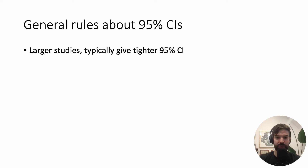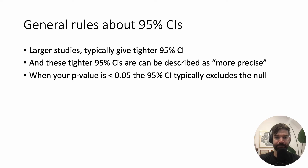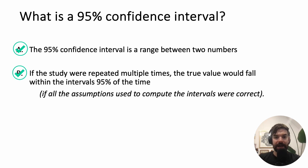Some general rules about 95% confidence intervals: larger studies will typically give a tighter interval — if you measure 1,000 giraffes you'd have a much tighter interval than if you measured four or five. These tighter intervals can be described as more precise. When your p-value is less than 0.05, the 95% confidence interval typically excludes the null. It is more useful to report a 95% confidence interval than just a p-value, because a p-value by itself can be meaningless whereas a confidence interval gives you the distribution of the data and the range of possible values.